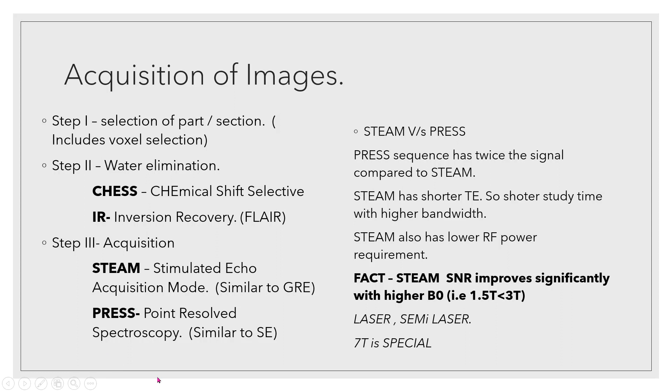Content-wise, PRESS will be better, but acquisition-wise STEAM is better. But remember this one interesting factor: as the field strength improves from 1.5T to 3T or 3T to 7T, the signal-to-noise ratio of STEAM keeps on improving. This is the last thing on the acquisition of images, which is actually an assignment for those who are watching this: please read about LASER and semi-LASER. These are newer acquisition techniques where you can use specially modified directions of various pulses to acquire even better histograms. Seven Tesla is even better - seven Tesla has a special sequence called SPECIAL in which you can use a technique to acquire STEAM images which are equally good or better than PRESS images or vice versa.